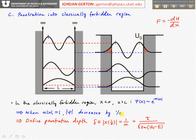where e is just the natural number. And so you have, at a particular position, you've dropped by 1 over e compared to what it was at the wall.